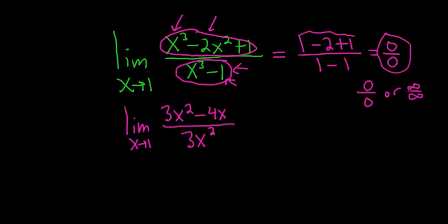Now we ask ourselves, can we plug in the number 1? Yes, we can. When we plug in the number, we drop the limit sign and replace all the x's with 1's. So this is 3 times 1 squared minus 4 times 1, over 3 times 1 squared.